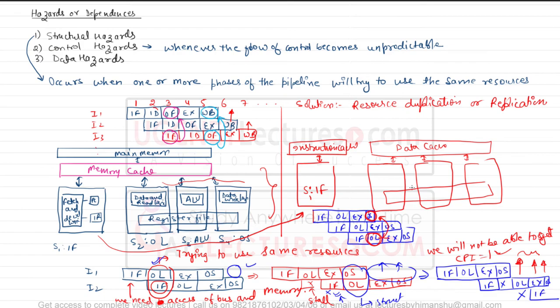It is not only memory that leads to structural dependencies — other resources like the register file also cause problems. For example, stages S2, S3, and S4 all share the register file, which can create structural dependency. Processors like MIPS R2000 and R3000 introduced solutions to structural dependency.